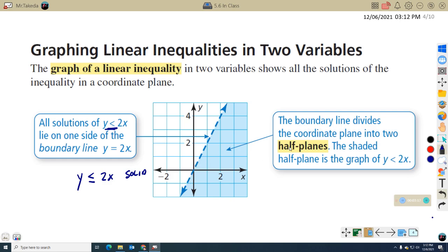Let's read this. The boundary line divides the coordinate plane into two half-planes. The shaded half-plane is the graph of y is less than 2x. So we're going to be shading. We may be cross-hatching some. I don't know if you've taken art with Mrs. Stukin, but we do cross-hatching to show shading sometimes.